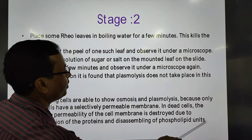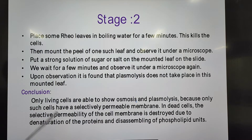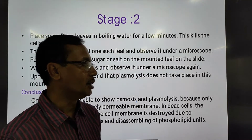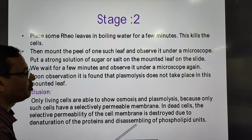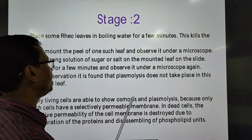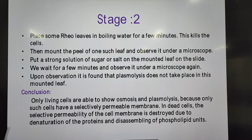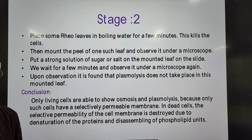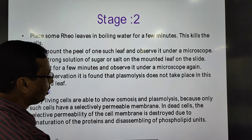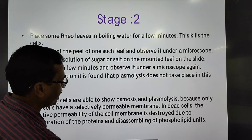The selective permeability of the cell membrane is destroyed due to denaturation of the proteins and disassembling of the phospholipid units. Since the plasma membrane is made up of phospholipids and proteins, denaturation and disassembly cause the membrane to totally lose its property of selective permeability — and therefore no osmosis or plasmolysis can occur.